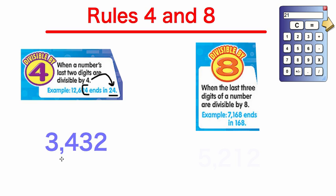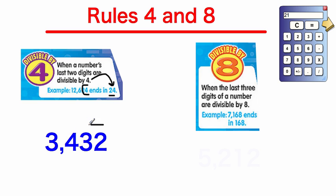Let's do a sample problem. We have 3,432 — is it divisible by 4 and 8? For the rule for 4, we chop off the last two digits: 32. Can 4 evenly go into 32? Yes — 32 divided by 4 is 8. So 3,432 is divisible by 4. For 8, we chop off the last three digits: 432. Using a calculator, 432 divided by 8 equals 54 evenly. So 3,432 is divisible by 8.